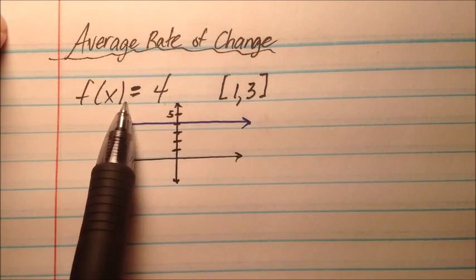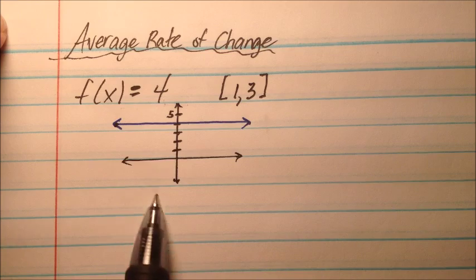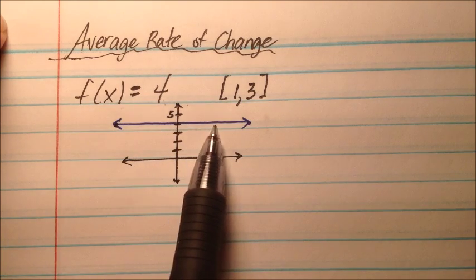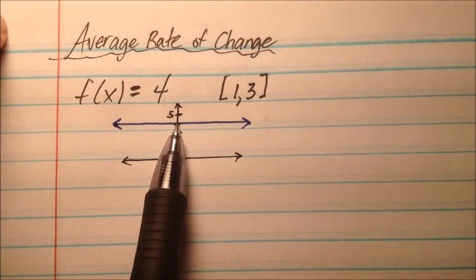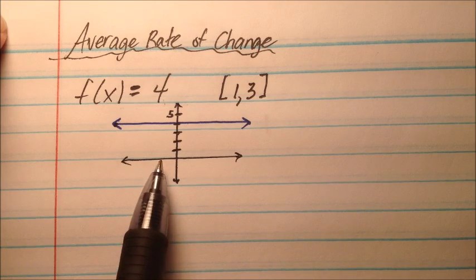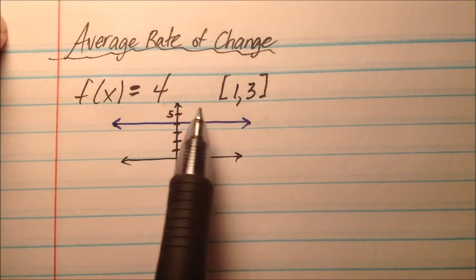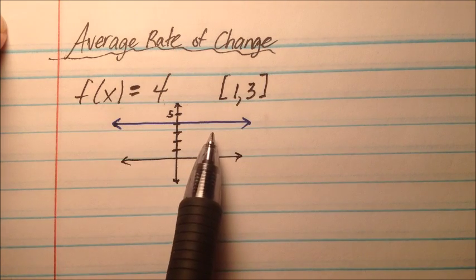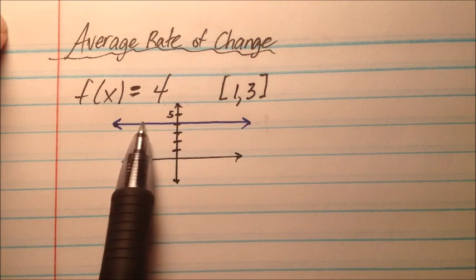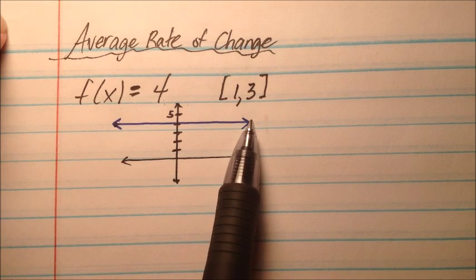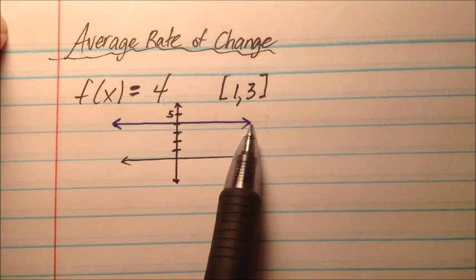The first example is f of x equals 4. If I were to graph this, I just have a flat horizontal line that passes through y equals 4. When we're talking about average rate of change, we're talking about slope a little bit. For linear functions, or for lines, the slope is going to be constant no matter where we look.